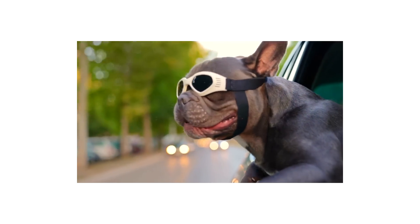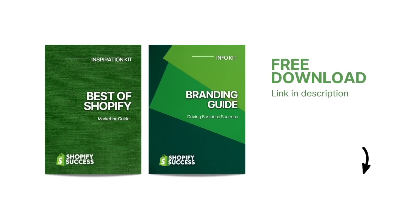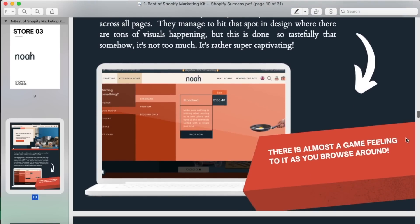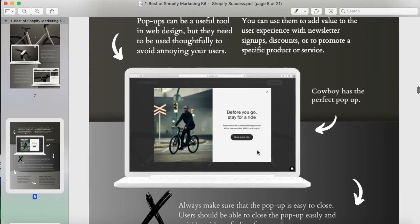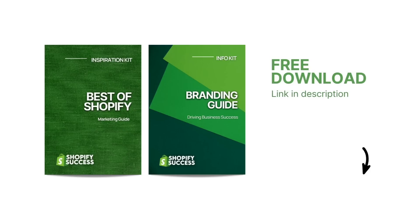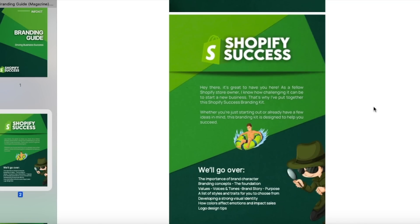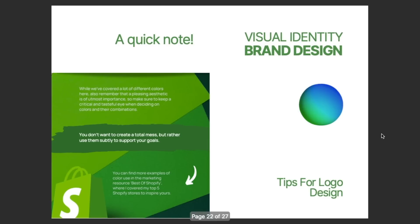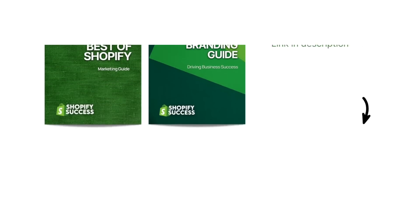Before you go, I also want to quickly let you know that in the description below, you can find a free resource pack I've designed to help you further into this journey. It's a digital magazine bundle featuring a marketing guide and a branding guide. I've chosen some of the coolest and most successful Shopify stores I've come across and broken them down into segments of what they're doing right, so you can follow their footsteps to create your own success story. It's loaded with top knowledge, marketing tips, and tons of inspiring ideas for your store. In the branding guide, you'll find pretty much everything you need to know to create a thriving brand from scratch — tips on brand identity, brand voice, visuals, intelligent color use for sales, and other insider knowledge. You can find both of those resources in a free bundle pack in the description.